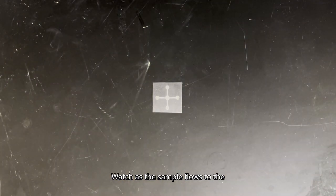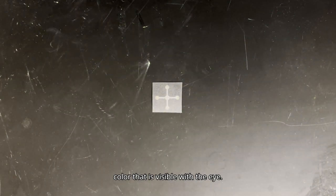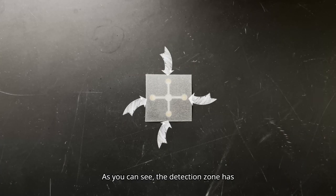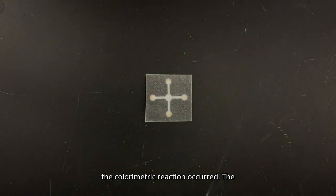Watch as the sample flows to the detection center and reacts with the reagent. The reaction will produce a color that is visible with the eye. As you can see, the detection zone has now changed color, which indicates that the colorimetric reaction occurred.